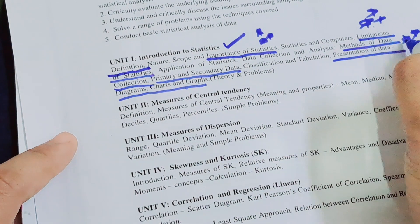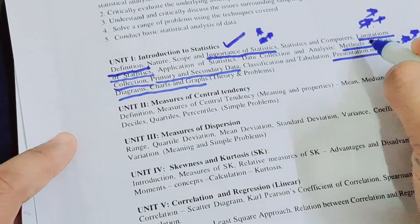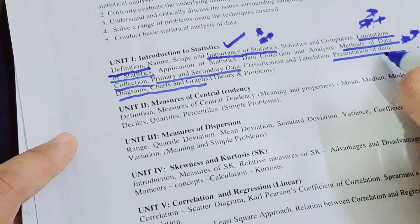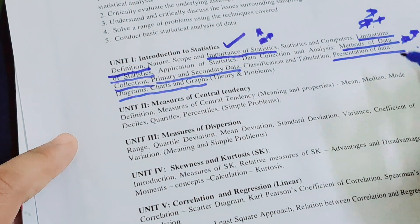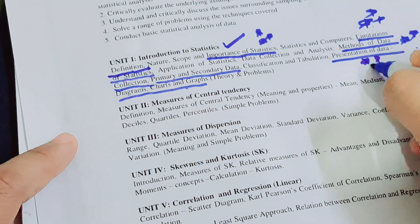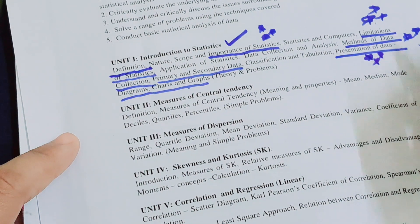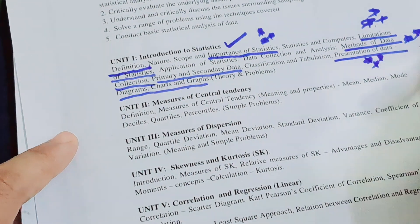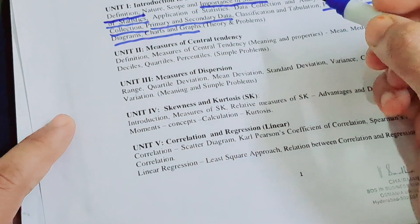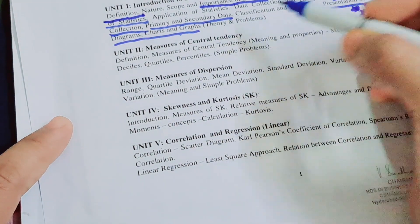After covering definition, importance, and methods of data collection, move on to presentation of data — diagrams and charts. This is also important for practical. In the exam, option A may have theory and option B may have a practical question.